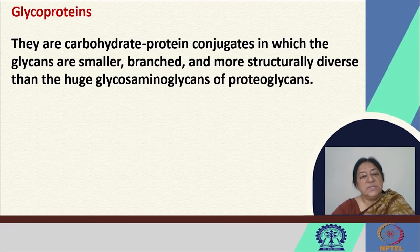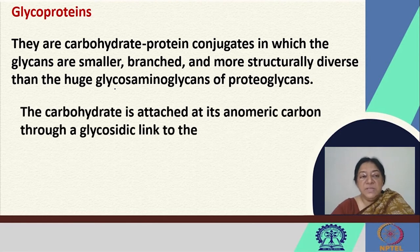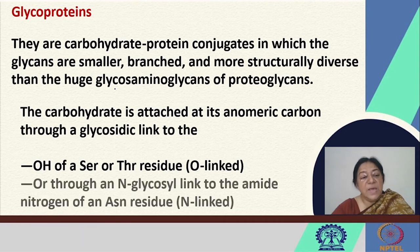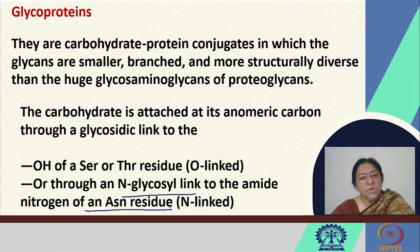In terms of glycoproteins, these carbohydrate-protein conjugates have glycans that are smaller, branched, and more structurally diverse than the larger glycosaminoglycans or proteoglycans. The carbohydrate is attached to its anomeric carbon through a glycosidic link — either to the OH of a serine or threonine residue, or through an N-glycoside link to the amide nitrogen of an asparagine residue. These residues are important in the connectivity of the protein with specific sugar moieties.